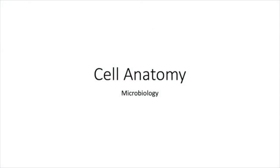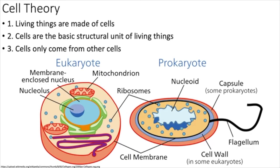That was an intro video from Nucleus Medical Media. Today we're talking cell structures — cell anatomy. We're going to cover eukaryotes, bacteria, and archaea. Cell theory: everything is made of cells. Cells are the most basic structural unit of living things, and cells can only come from other cells. It is the smallest unit.